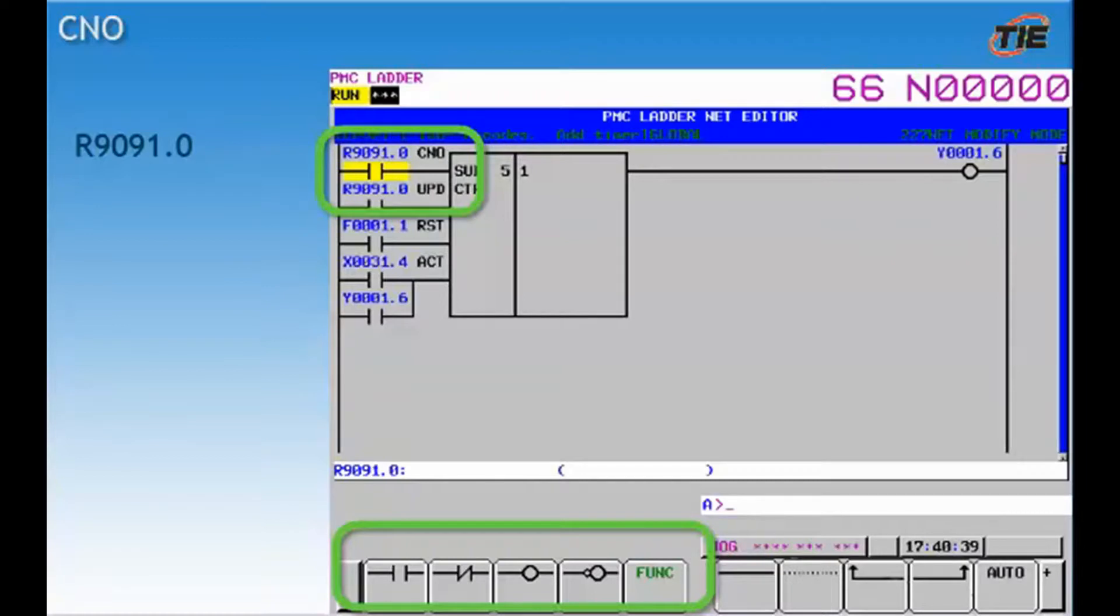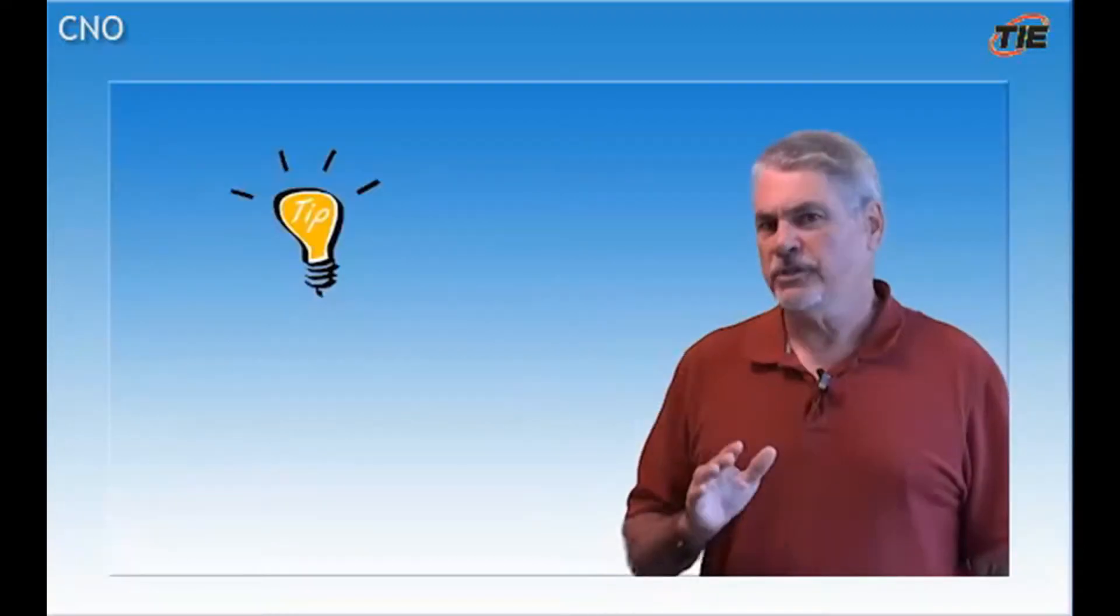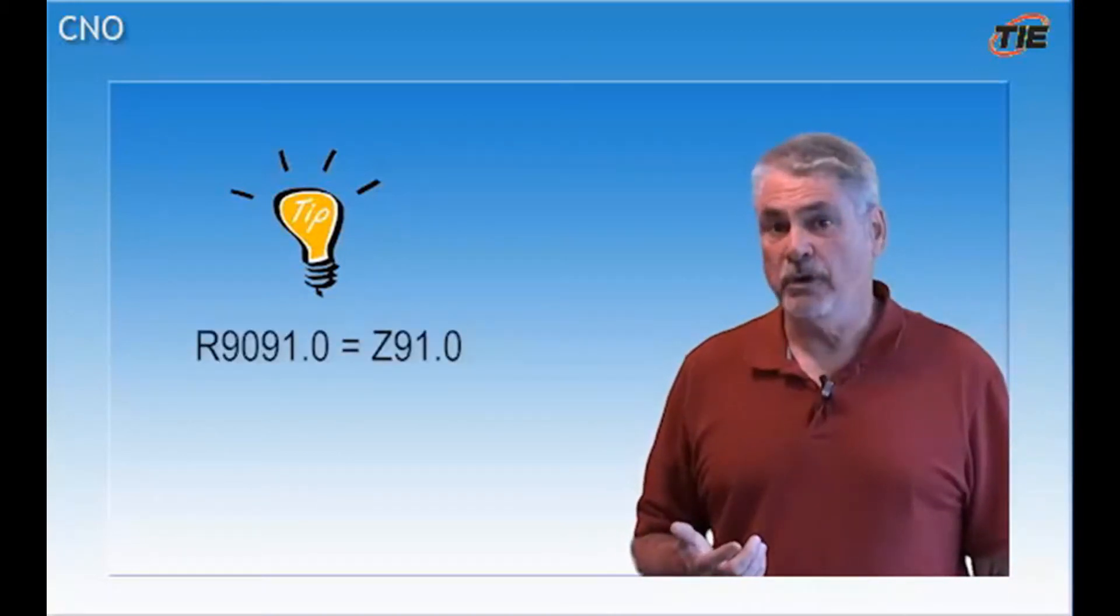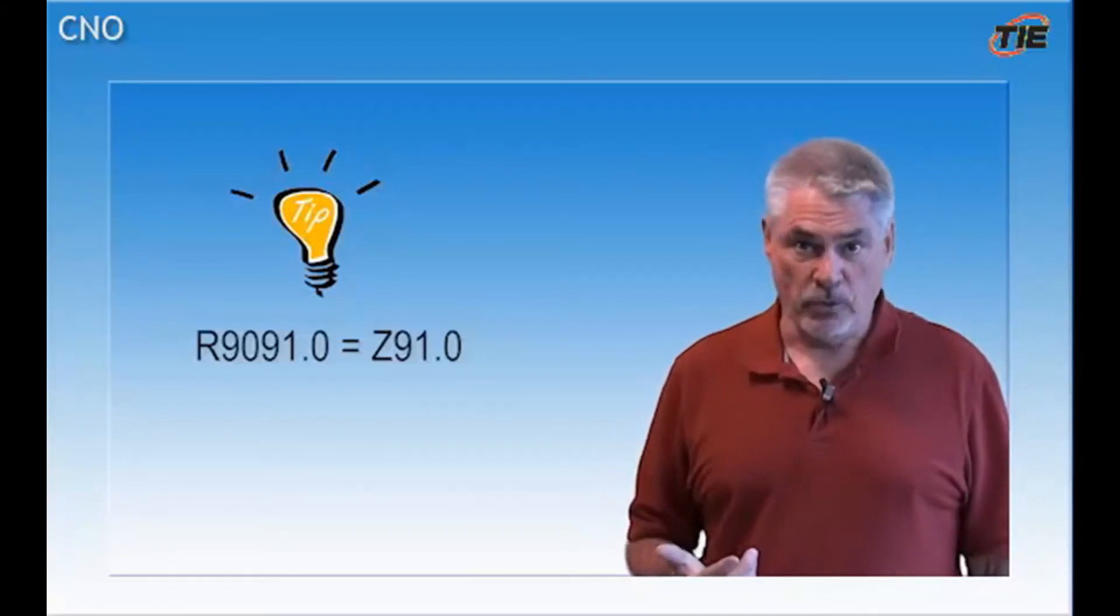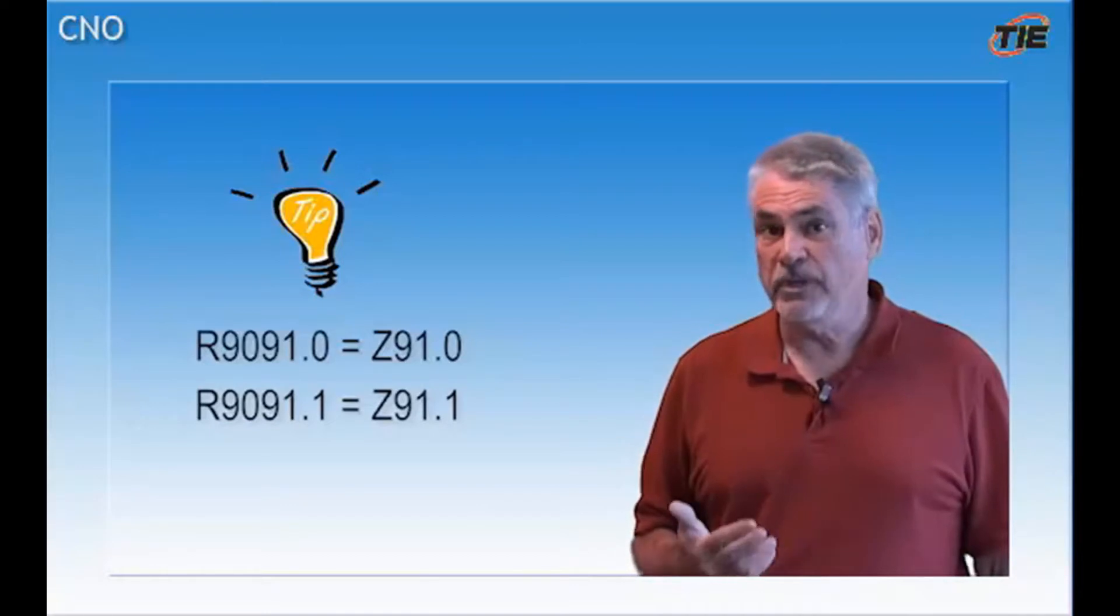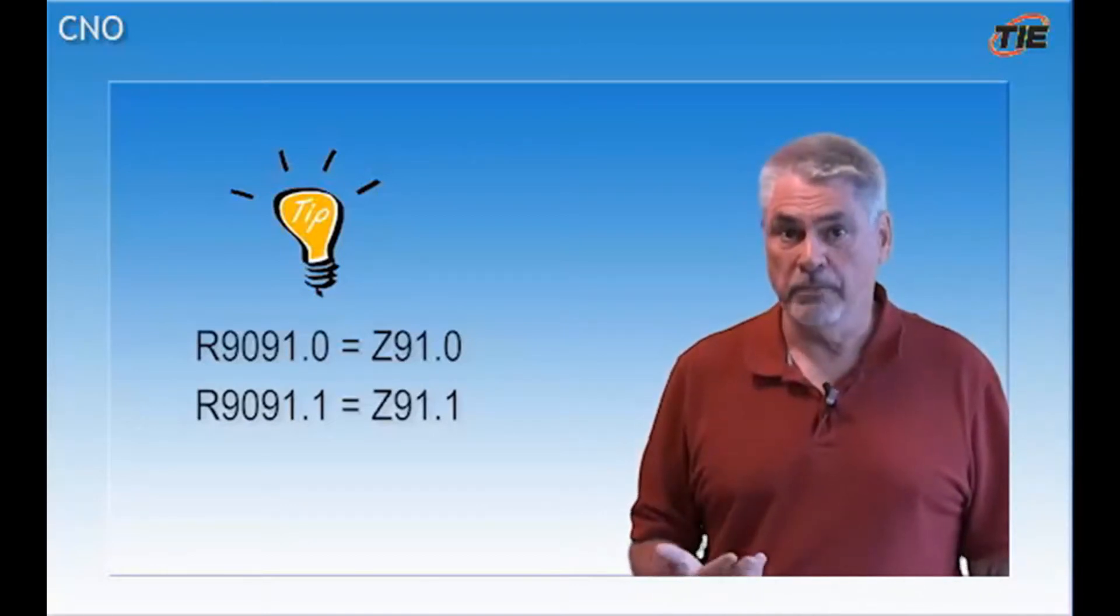R9091 bit zero is always off. R9091 bit one is always on. There are no coils for these contacts. Just as a side note, FANUC has started to switch these addresses over to a new address. This is the Z address. R9091 bit zero can be shown as Z91 bit zero and R9091 bit one can be shown as Z91 bit one.